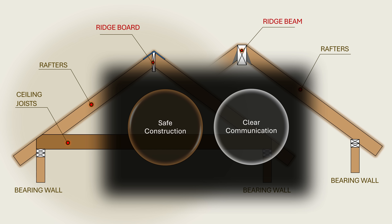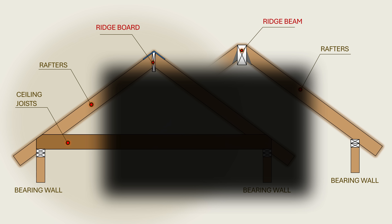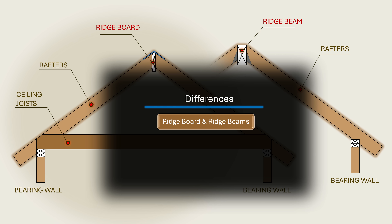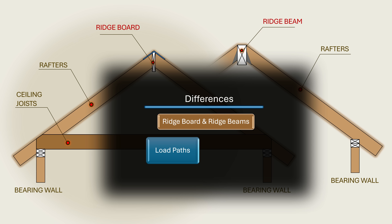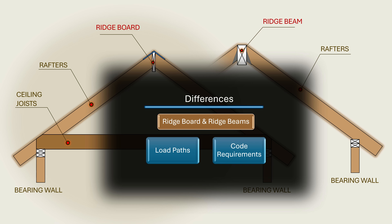In this video, we are going to explore the critical differences between ridge boards and ridge beams. We will examine how each functions within a roof system as far as load path is concerned. Additionally, we will highlight code requirements in the International Residential Code that provide design and construction guidelines.